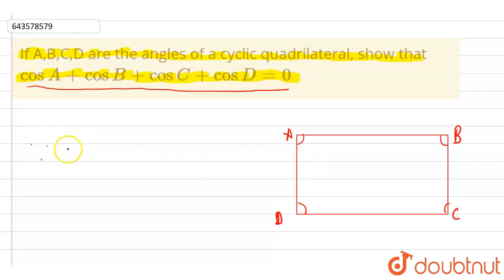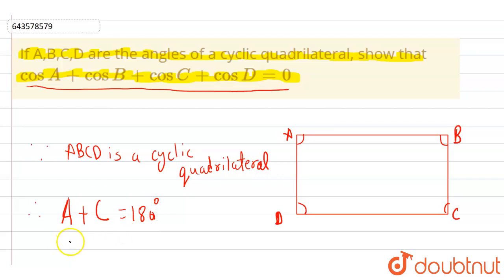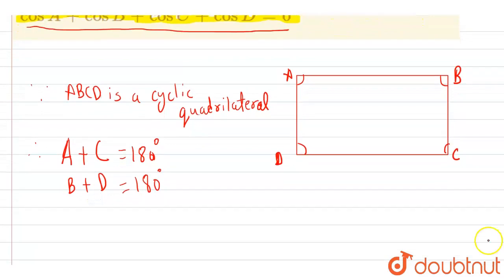First of all, let us write what we have given. We have given that A B C D is a cyclic quadrilateral. Now since A B C D is a cyclic quadrilateral, therefore the sum of the opposite angles: angle A plus angle C should be equal to 180 degrees, and similarly angle B plus angle D should be equal to 180 degrees, because in a cyclic quadrilateral the sum of opposite angles equals 180 degrees. Let us assume this as equation one and this as equation two.